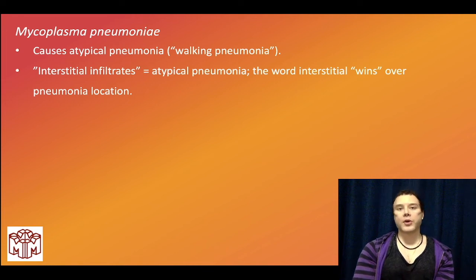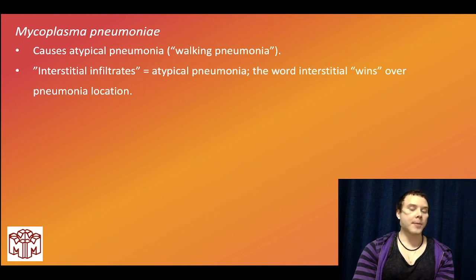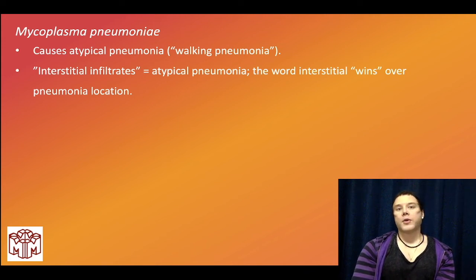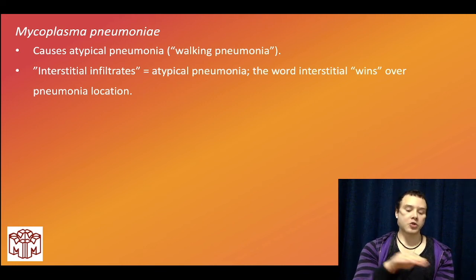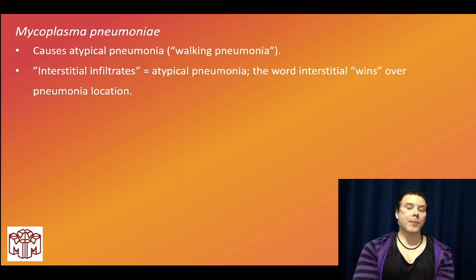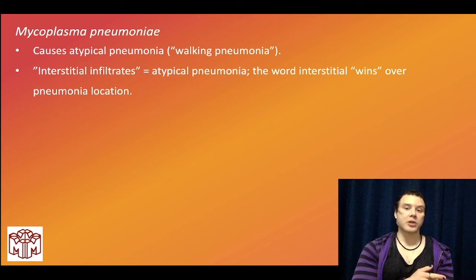Example: 23-year-old male, fever 102, right lower lobe consolidation with dullness to percussion — most likely causal organism is Strep pneumo (most common cause of lobar pneumonia). Next: 23-year-old male, fever 101, bilateral interstitial infiltrates — answer is Mycoplasma. Next: 23-year-old male, fever 101, right lower lobe consolidation with interstitial infiltrates — answer is still Mycoplasma, and Strep pneumo won't be listed. The word 'interstitial' wins over location — I've seen that in a 2CK-level IM question.